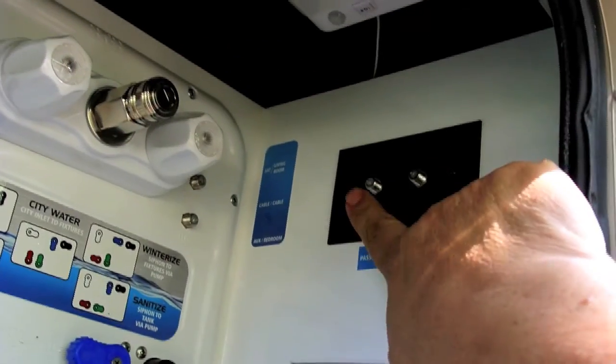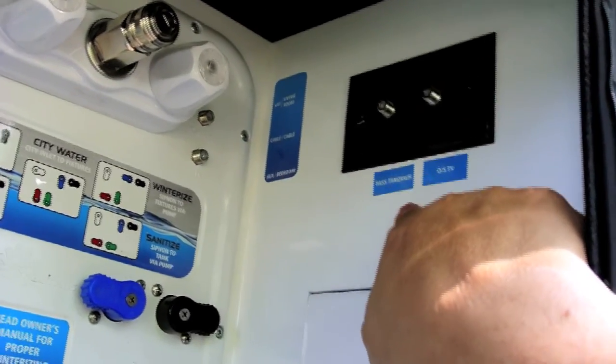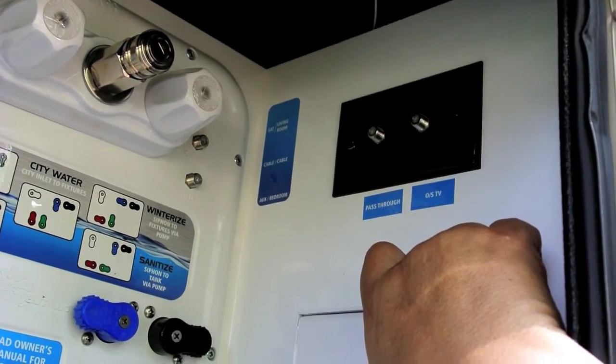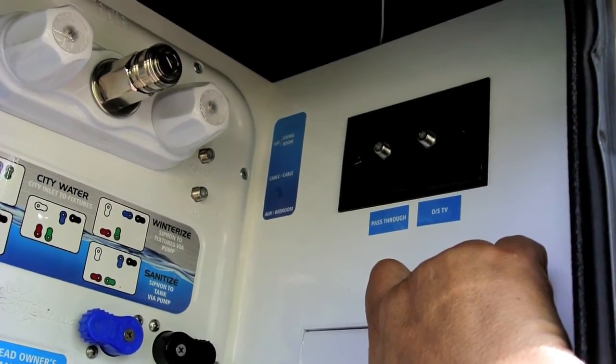One thing I need to do is find out where these go. Now they are labeled but path through to me is meaningless. There's nothing in the RV manual tells you what those are for.